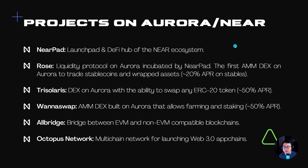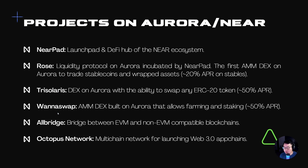Let's take a look at a couple of projects in the Aurora ecosystem. We have NEARPAD, which is a launchpad as well as a DeFi hub of the NEAR ecosystem. Next, we have ROSE, which is a liquidity protocol on Aurora incubated by NEARPAD. ROSE is similar to Curve in that it is a stablecoin swap protocol, giving about 20% APR on stables right now. Next up we have Trisolaris, which is similar to Uniswap — basically a Uniswap fork — giving about 50% APR on the NEAR-Ethereum pair.